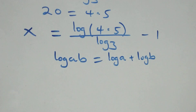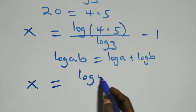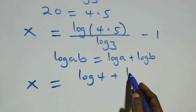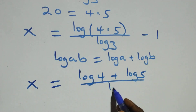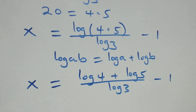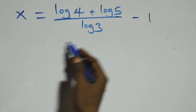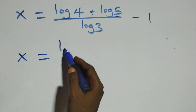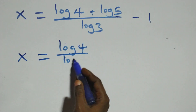So what we have becomes x equals (log 4 plus log 5) over log 3 minus 1. Next step: we separate this into two fractions, giving x equals log 4 over log 3 plus log 5 over log 3 minus 1.